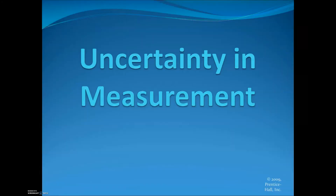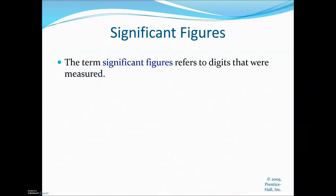In this video, we're going to be talking about uncertainty in measurement and what exactly uncertainty is. This is really going to get into significant figures and how we use measurements made in the lab or given information, making sure to record to the correct units and decimal places — significant figures in your final answer. Significant figures refers to the digits that were measured in the experiment.